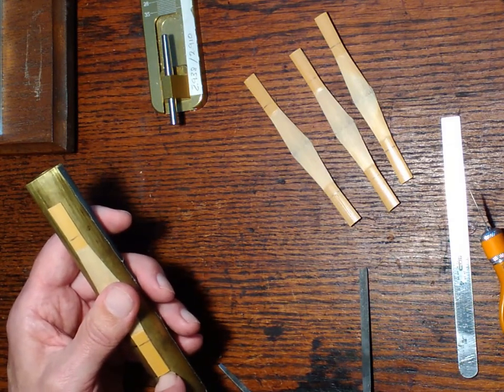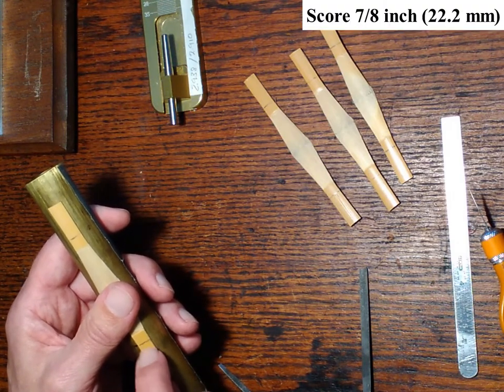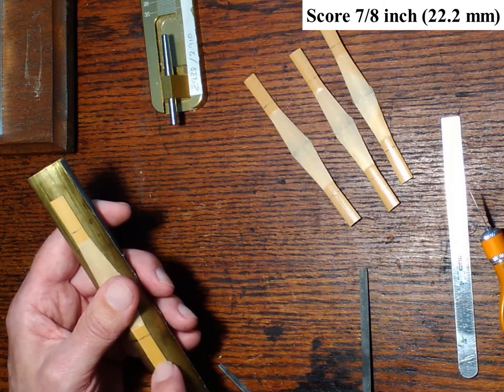I like to measure how long I make my reeds. I use seven-eighths of an inch, that's a little over 22 millimeters.